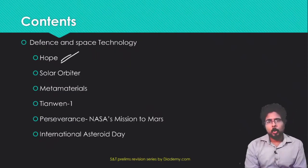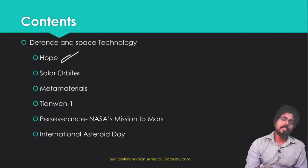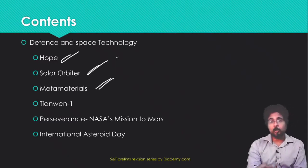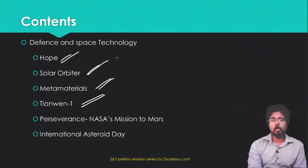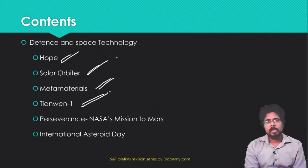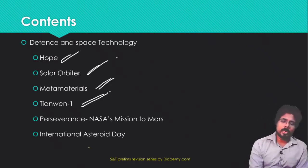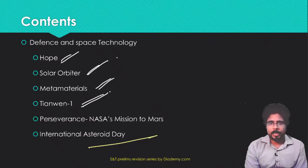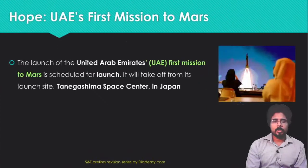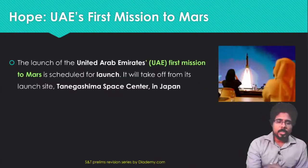First we will talk about the Hope Mission — what it is all about, who launched it. After that we will see what the Solar Orbiter is and which agency launched it. Then we will talk about metamaterials. After that we will see the TN-1 rocket and which country launched it. Then we will see the Perseverance, which is NASA's mission to Mars, and finally the International Asteroid Day.